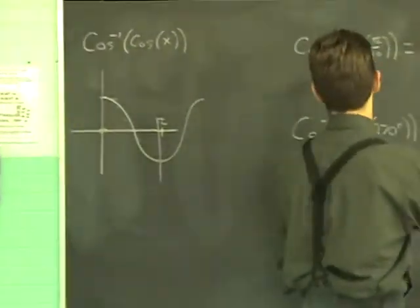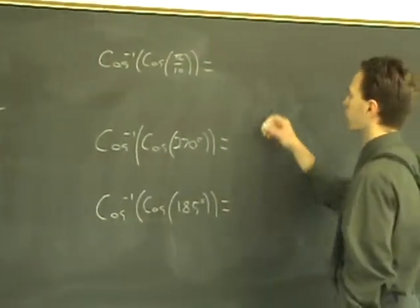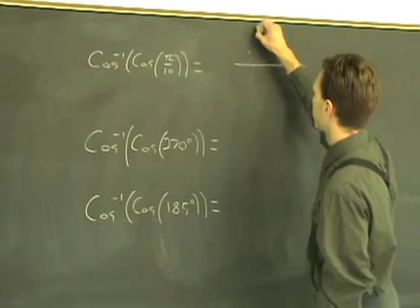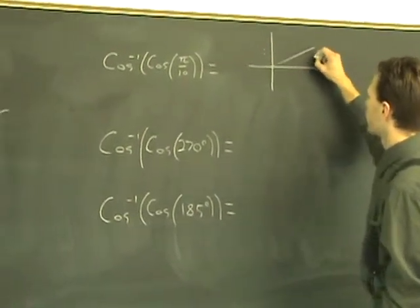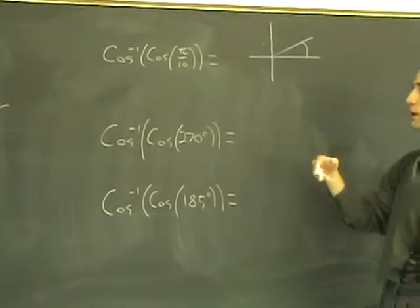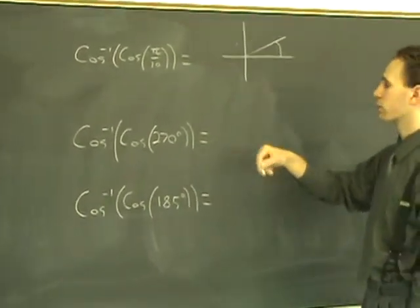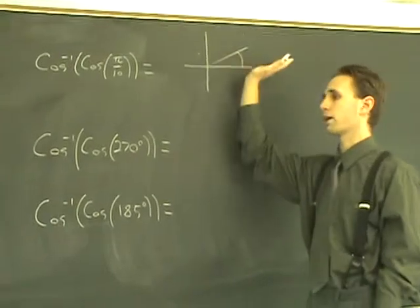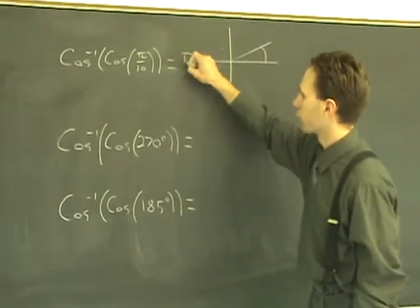So for example here, cosine inverse of cosine pi over 10. Where does it wind up? Well, pi over 10 is pretty small. That's a pretty small angle. You take that angle, you take its cosine, get a number, and then when you invert it, it's going to give you that same number back because it's already between 0 and pi. So that will give you pi over 10.